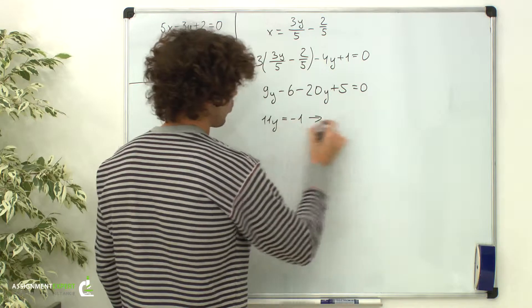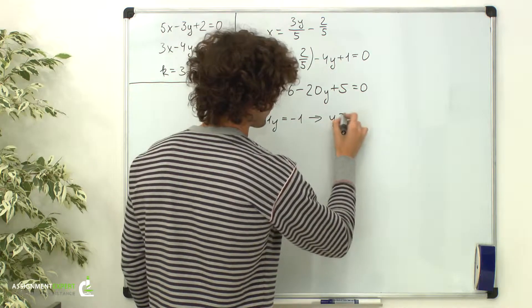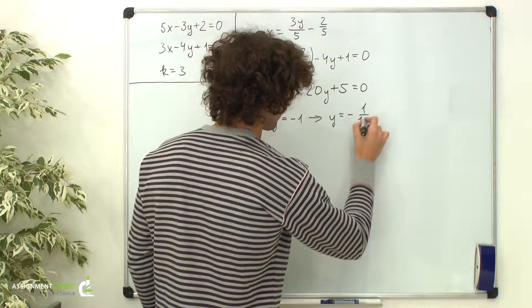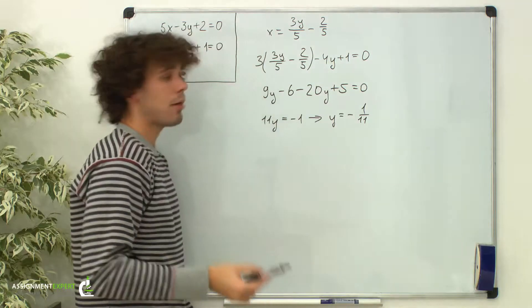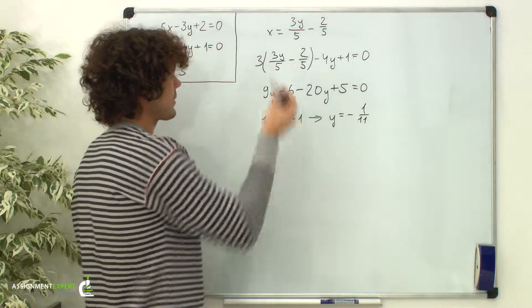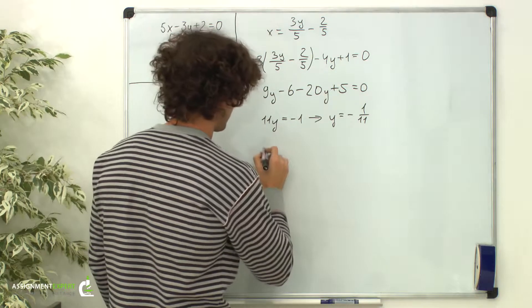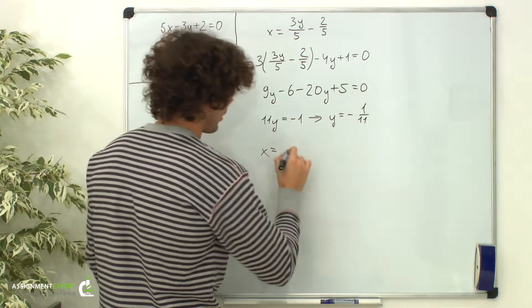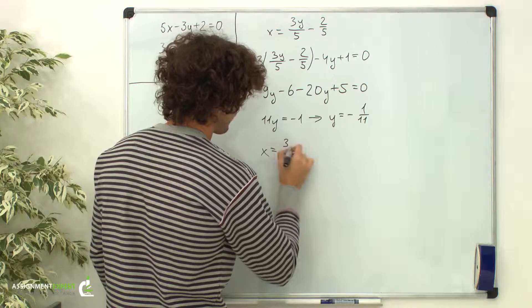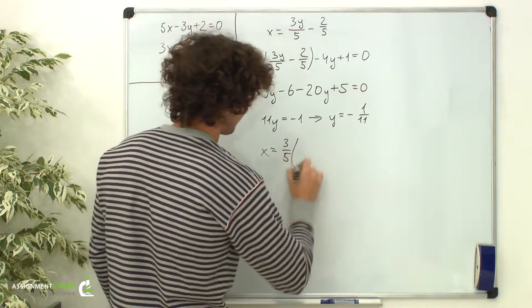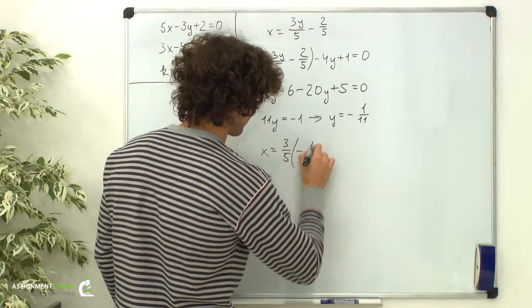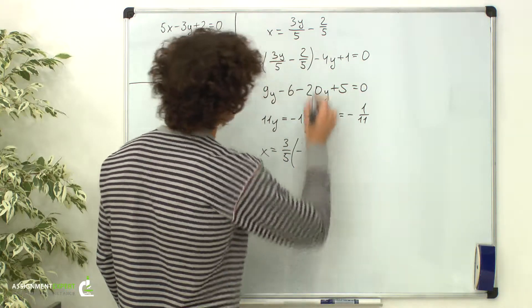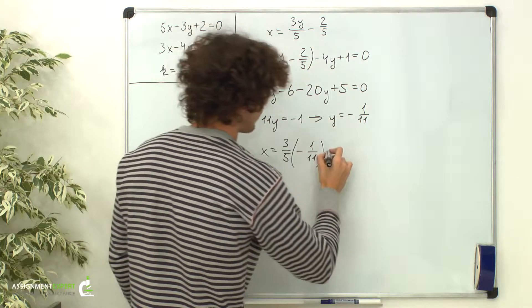Which gives us negative 11y equals negative 1, so y equals negative 1/11. And now we can find x. x equals 3/5 times negative 1/11 minus 2/5.